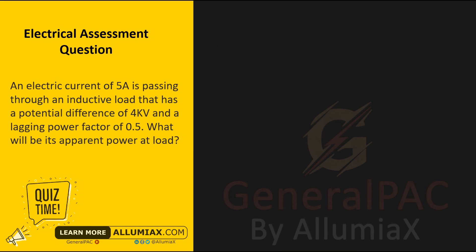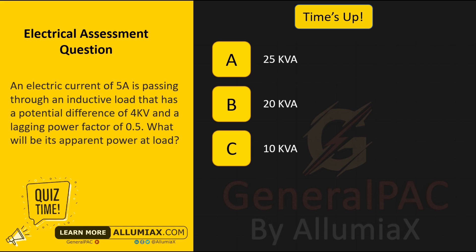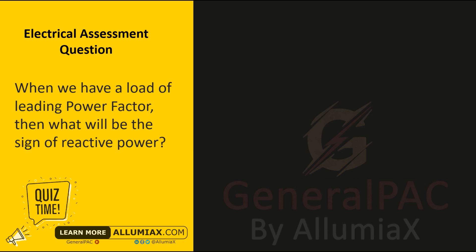An electric current of 5 amps is passing through an inductive load that has a potential difference of 4 kilovolts and a lagging power factor of 0.5. What will be its apparent power at load? A: 25 kVA, B: 20 kVA, C: 10 kVA. Time's up. The answer is B: 20 kVA. S = V·I = 4000 × 5 = 20,000 VA, or 20 kVA.